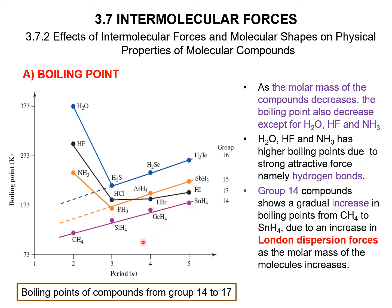Group 14 shows a gradual increase in boiling point from methane to tin, due to the increase in London dispersion forces as the molar mass of the molecules increases.